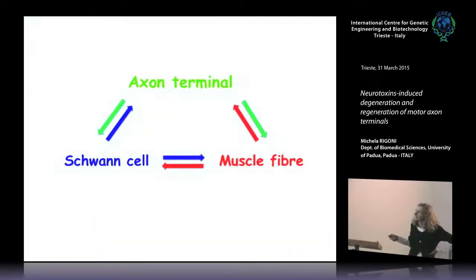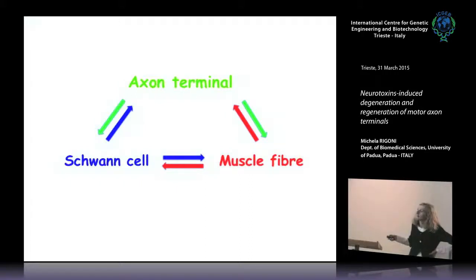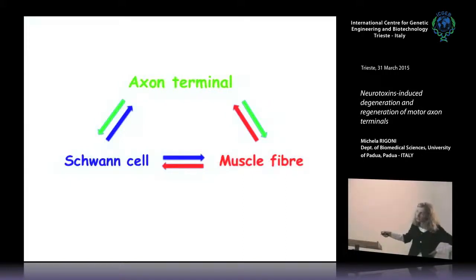We are looking at the messengers that the three main components of the neuromuscular junction send to communicate. We are studying the cross-talk among these cells, with a particular interest in the role of Schwann cells — and particularly the terminal Schwann cells — in this process.